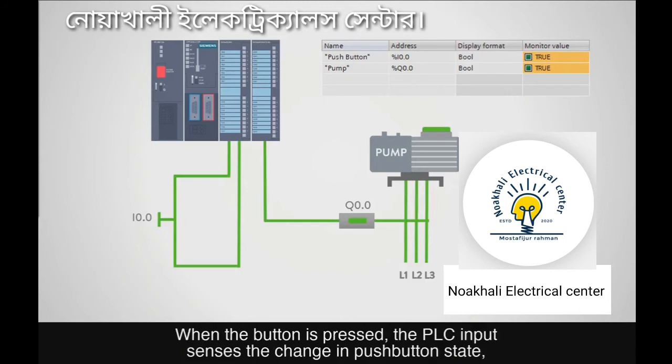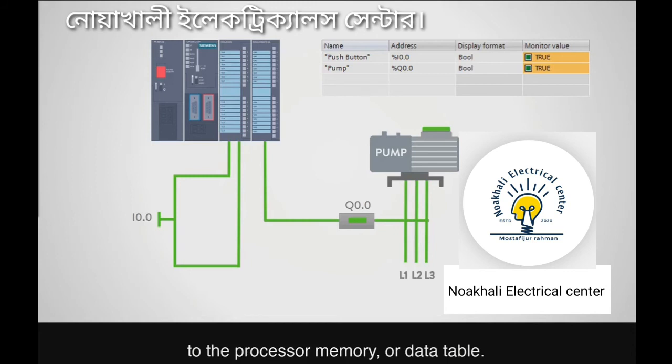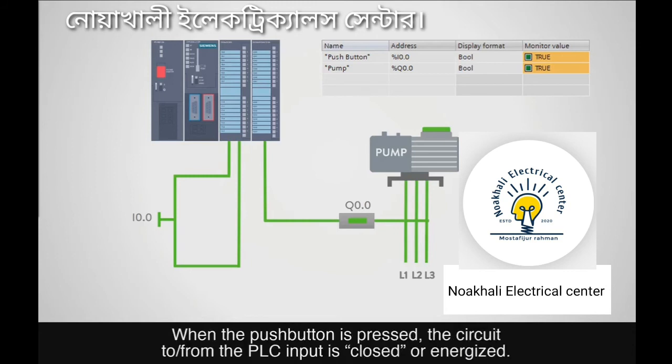When the button is pressed, the PLC input senses the change in pushbutton state and transmits this data through a communication channel to the processor memory or data table. When the pushbutton is pressed, the circuit to and from the PLC input is closed or energized.